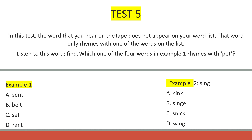Test 5. In this test, the word you will hear does not appear on your word list. That word only rhymes with one of the words on the list. Example 1. Listen to this word: pet. Which of the four words in Example 1 rhymes with pet? The correct word is set. The other words do not rhyme with pet. The letter written against set is C and this is recorded by shading answer space C against number 1.